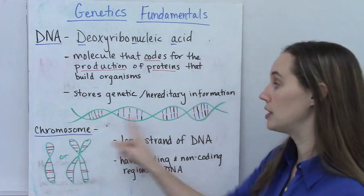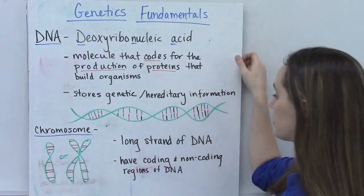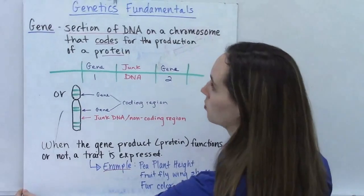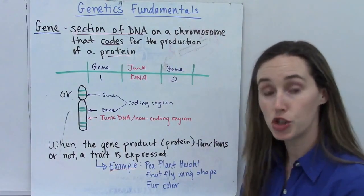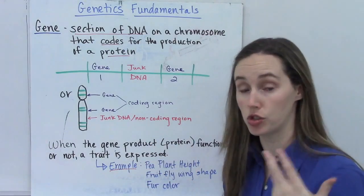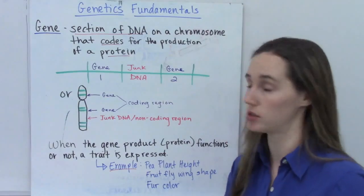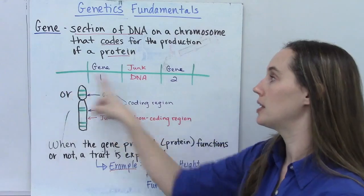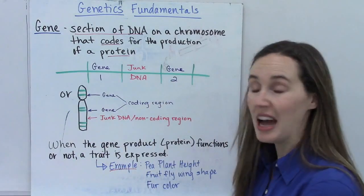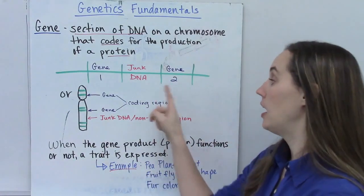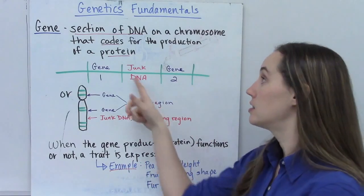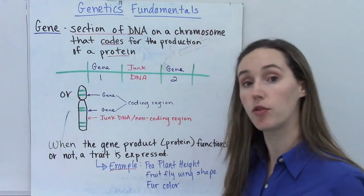DNA you typically see in this shape, this is a double helix shape. So if you see this, this is a picture of DNA. Genes are sections of DNA on a chromosome that code for the production of a protein. So genes are those protein coding regions. You may see in a picture this green line as like a strand of DNA, and part of those being coding regions called genes. And then most of your DNA actually is non-coding, sometimes called junk DNA.